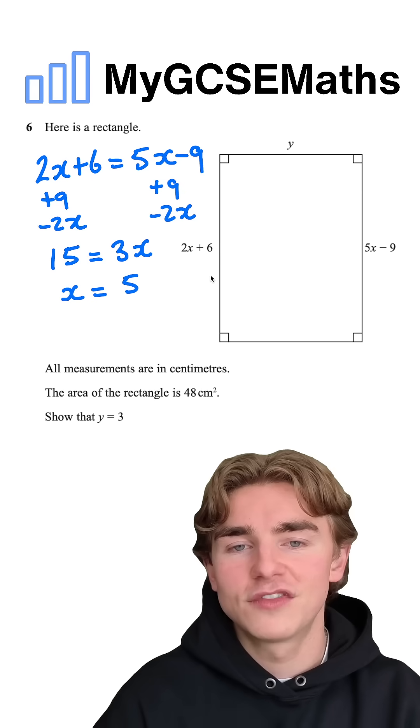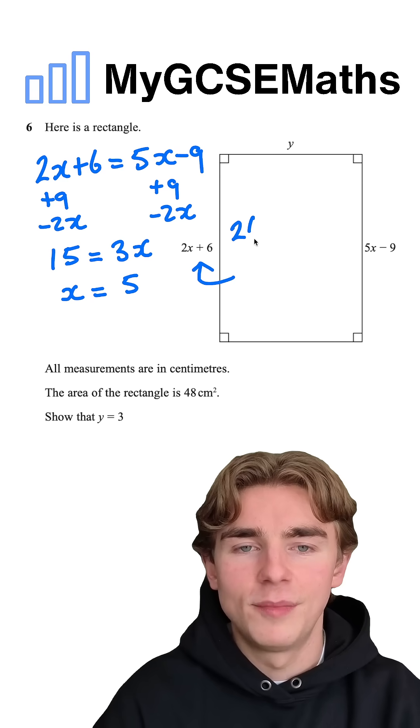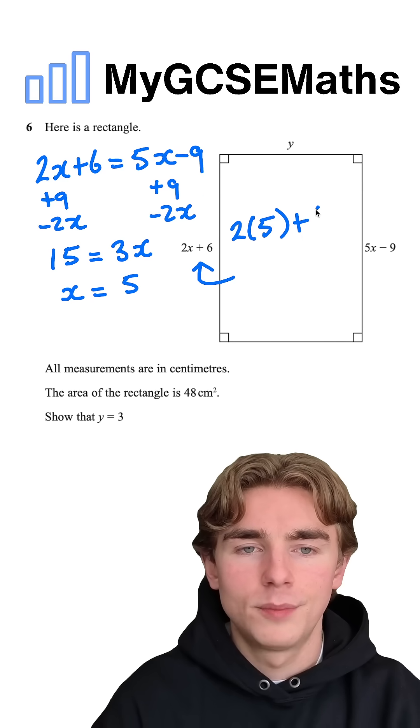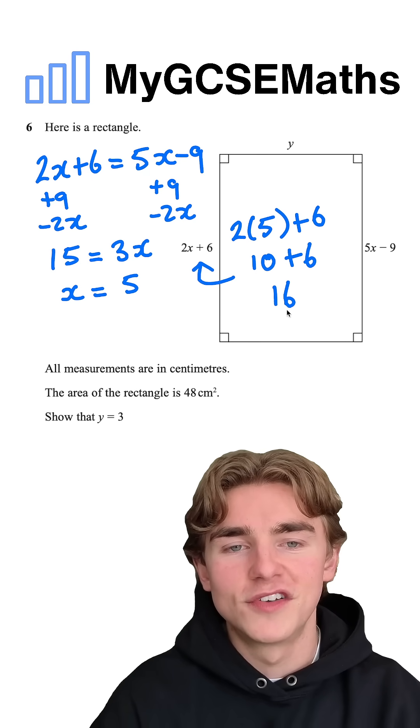Now that we have the value of x, we can work out our height. We're going to substitute 5 in. We have 2 times 5 plus 6. 2 times 5 is 10, so we have 10 + 6, which is 16.